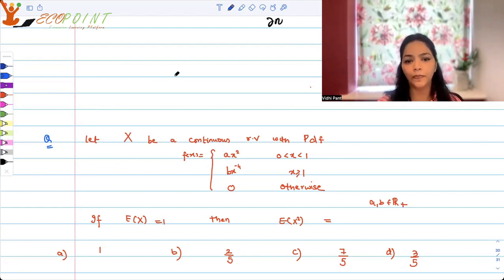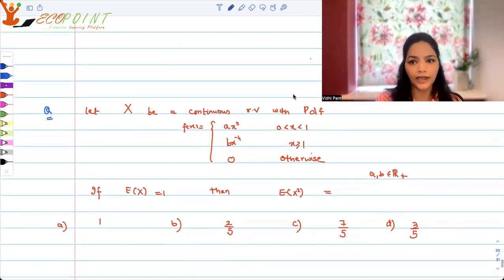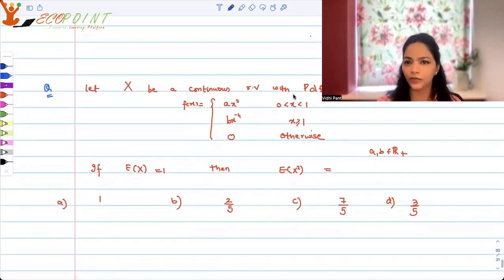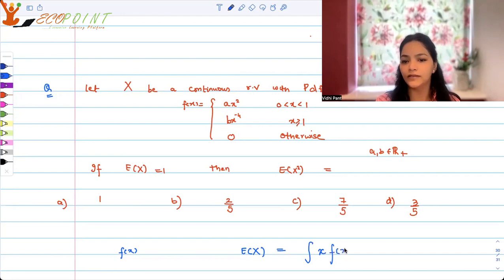Will it be just 1, 2 by 5, 7 by 5, or 3 by 5? So let's start calculating. It's a calculated question, but it's quick calculation. You have fx with you and you should know what is expected value of a random variable. It is the integral in the entire domain x fx dx.